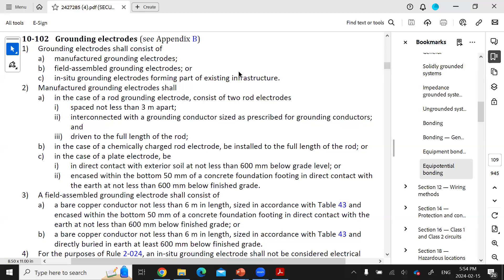Let's talk about Rule 102 of Section 10 of the Canadian Electrical Code. We're still in the grounding section of the Canadian Electrical Code, and it's talking about the grounding electrodes themselves. This section says that the electrodes can consist of manufactured grounding electrodes that you can buy, field-assembled grounding electrodes that you can cobble together out of your own material, or in-situ grounding electrodes forming part of an existing infrastructure.